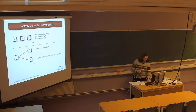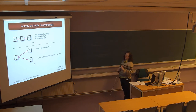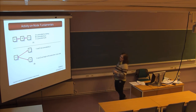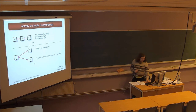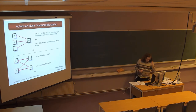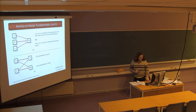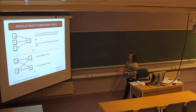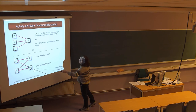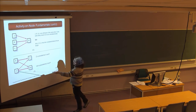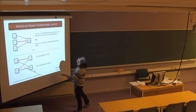For activity-on-node fundamentals: A is preceded by nothing; B is preceded by A; C is preceded by B. You can have X which bursts into Y and Z, so Y and Z are both preceded by X and can happen at the same time. Then you have merges: J, K, and L can all happen at the same time, and M is preceded by J, K, and L — they must all be completed before M can begin. Crossovers are also allowed, where a node can be preceded by activities from different branches.